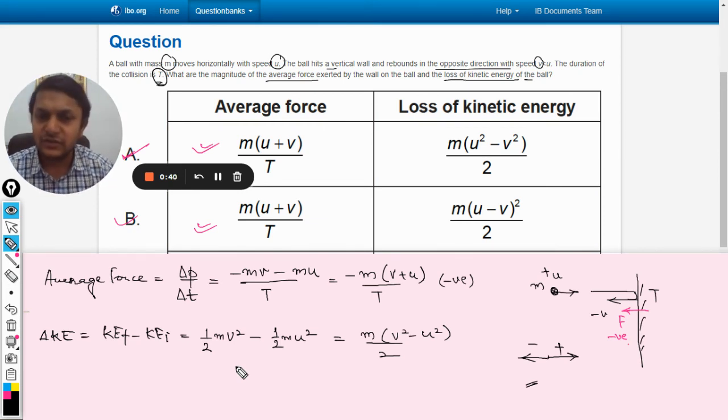So this is the loss of the kinetic energy, the change in kinetic energy. So this energy has been lost. So accordingly we find that A option is absolutely correct. So with this, all the best.